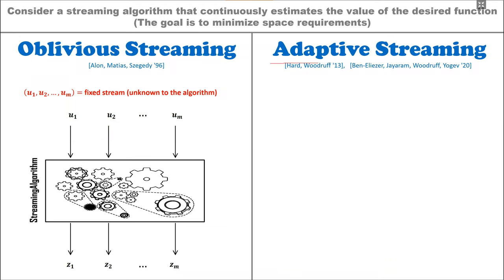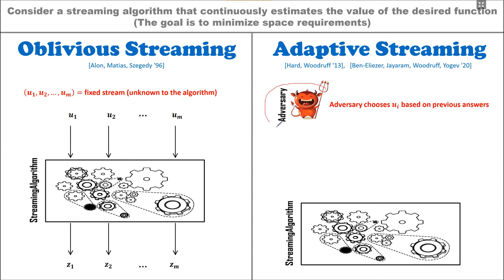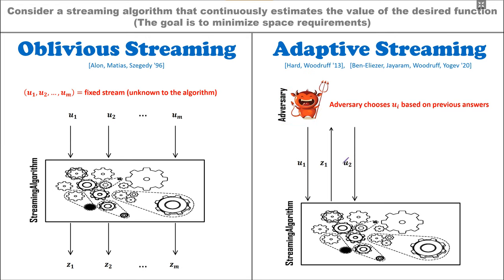In the adversarial setting, we still have our streaming algorithm, but the input stream is not fixed in advance. Instead, there is an adversary that chooses the updates one by one as time goes by. The adversary chooses the first update, the streaming algorithm gets it and responds with its current estimation. The adversary sees this response and, based on it, chooses the next update. This continues: the algorithm responds, the adversary observes and chooses the next update, and so on.